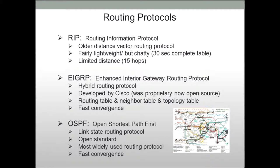One of the things about EIGRP is it has fairly fast convergence. Part of what makes it fast is that it only broadcasts changes to known routes — it doesn't broadcast all routes all the time, only changes.